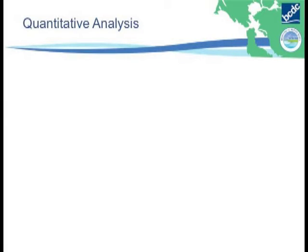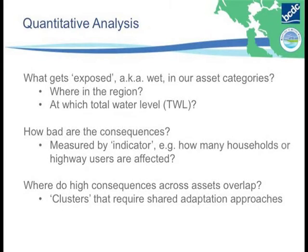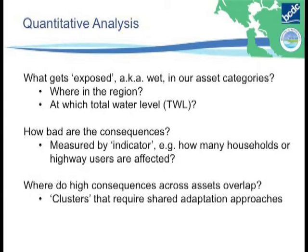We use all this for a quantitative analysis broken down into three questions: What gets exposed — for normal-term wet asset categories, where is that in the region, and at what total water level, which can indicate timing? How bad are the consequences when that gets wet? And where are there overlaps where we have to solve multiple problems at once and can have co-benefits?